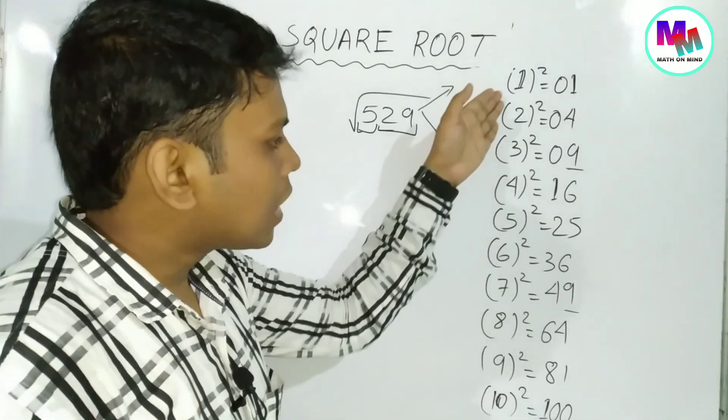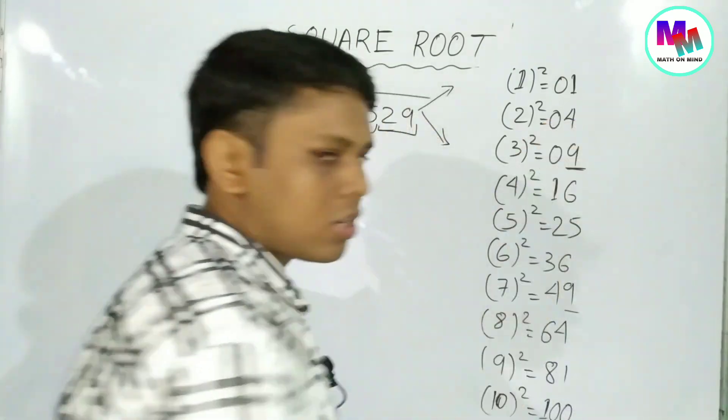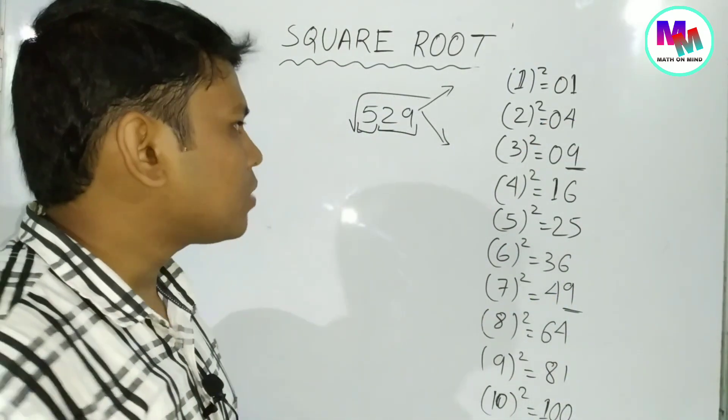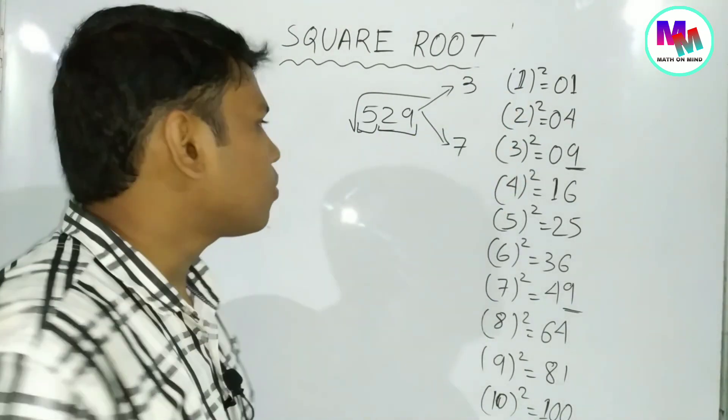To find the square root, we start from the right. Every day we group in pairs - we take the digits in pairs from right to left.